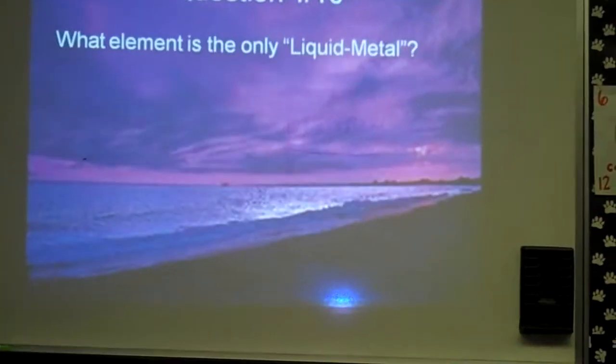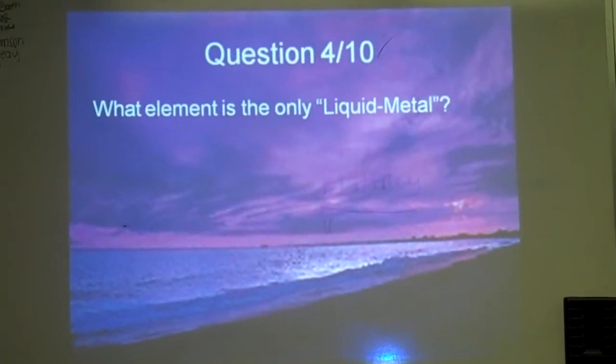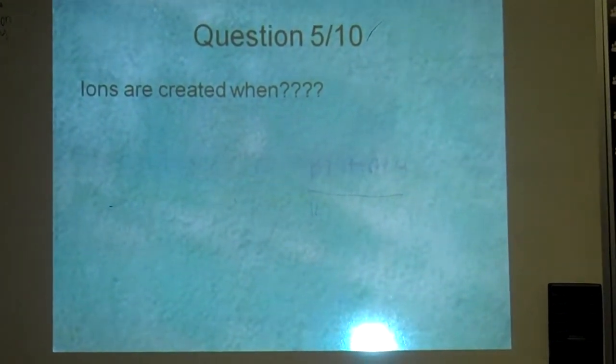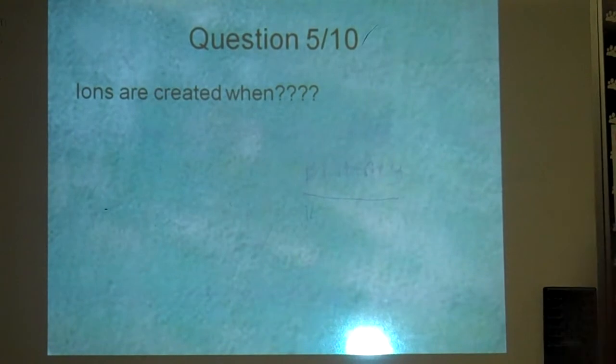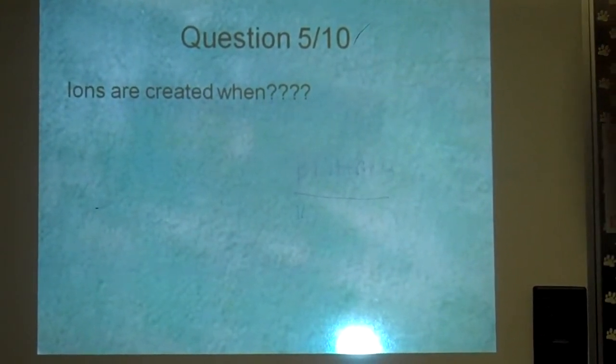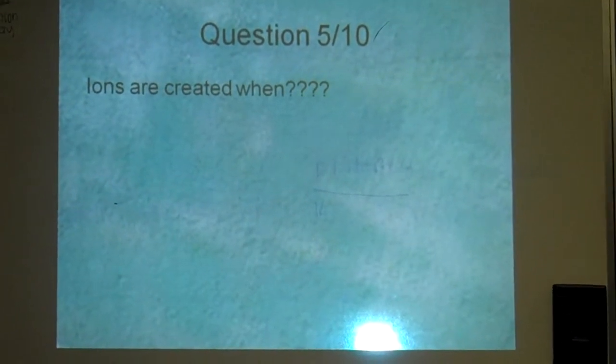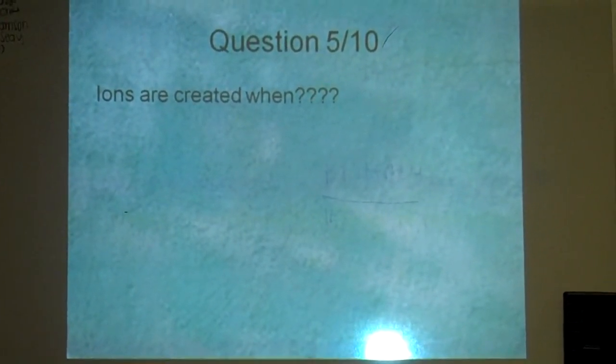Question 4: What element is the only liquid metal? Great. Question 5: Ions are created when... Chris. When an element, or an atom I guess, gives or takes an electron.